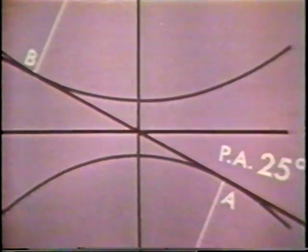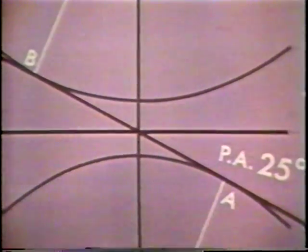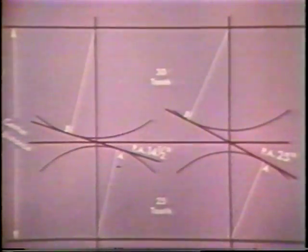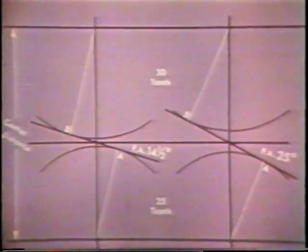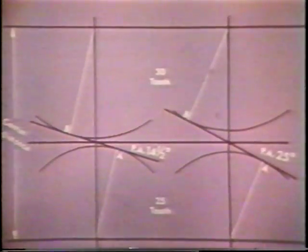A, the tangent point of the smaller base circle and the line of action, is a point of origin of the involute of the smaller gear, and B, a point of origin of the larger gear profile. Since there cannot be any involute action outside the points of origin A and B, they determine the maximum possible length of the zone of contact of the profiles, and are called interference points.